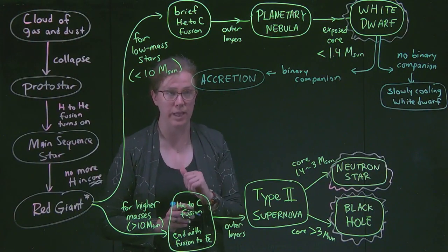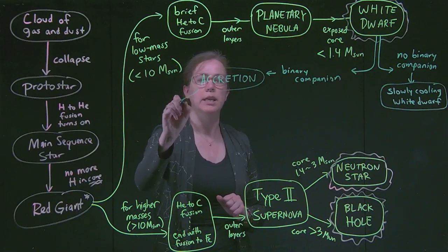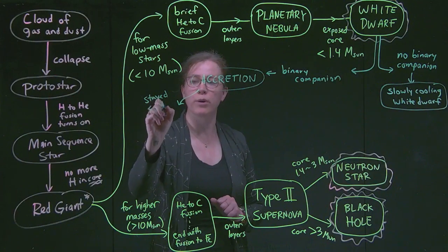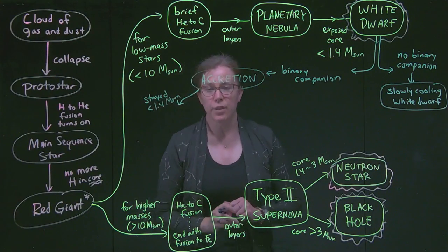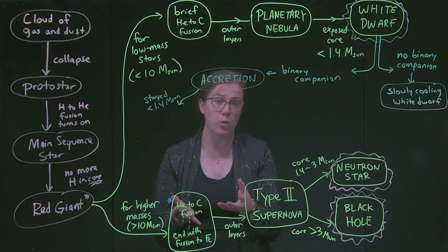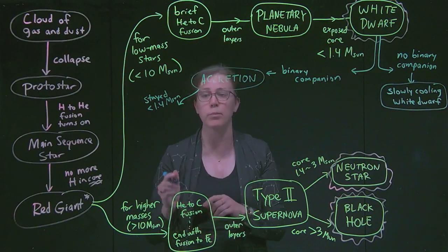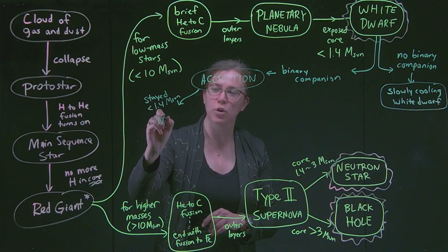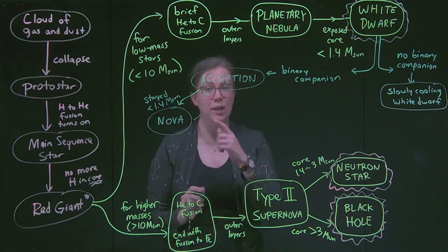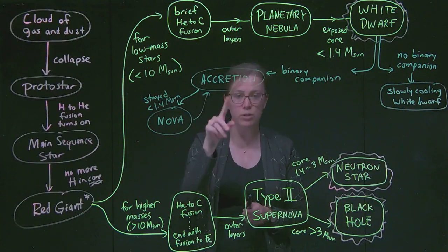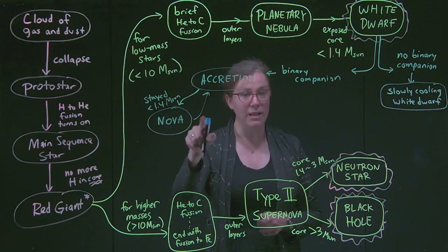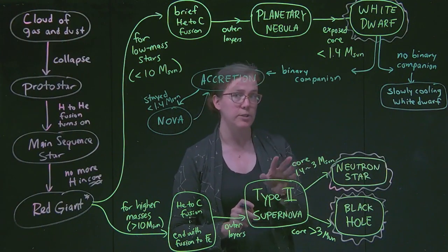There are two things that can happen then when we have gained extra material. If we have stayed below that 1.4 solar mass threshold, then we might gain enough material to have material on the outer surface of that white dwarf experiencing very hot, dense environment. And we'll have a flash of fusion called the nova. And then that can repeat and it can go back to accretion and we can have this nova come back multiple times, however much we want to. And that process will end once the binary companion is no longer giving material. And then we'll go back to being a slowly cooling white dwarf.